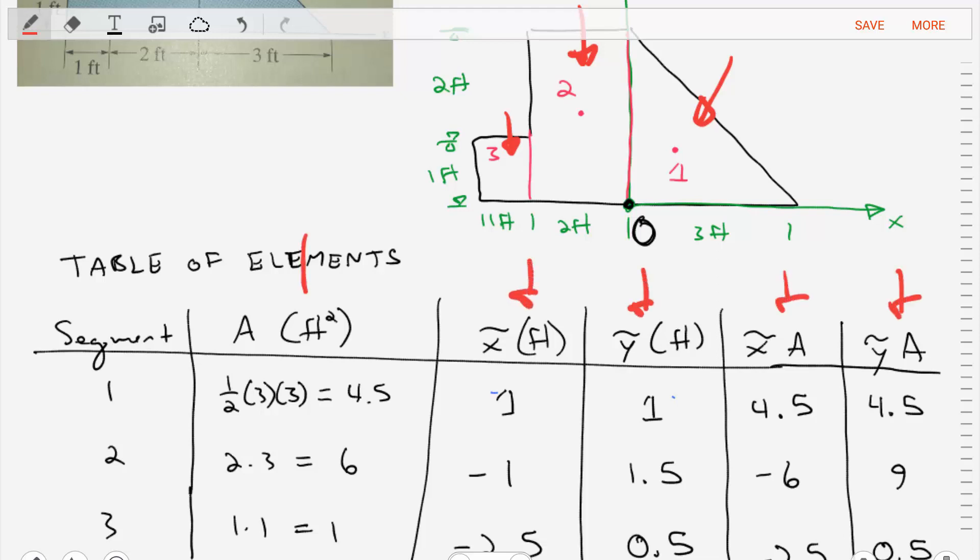We want to find these things for the triangle, for the rectangle, and for the square. For the triangle, the area is one half the base times the height. Its x position from point 0 is 1, and its y position is 1. And then x tilde times A and y tilde times A are pretty straightforward to find.